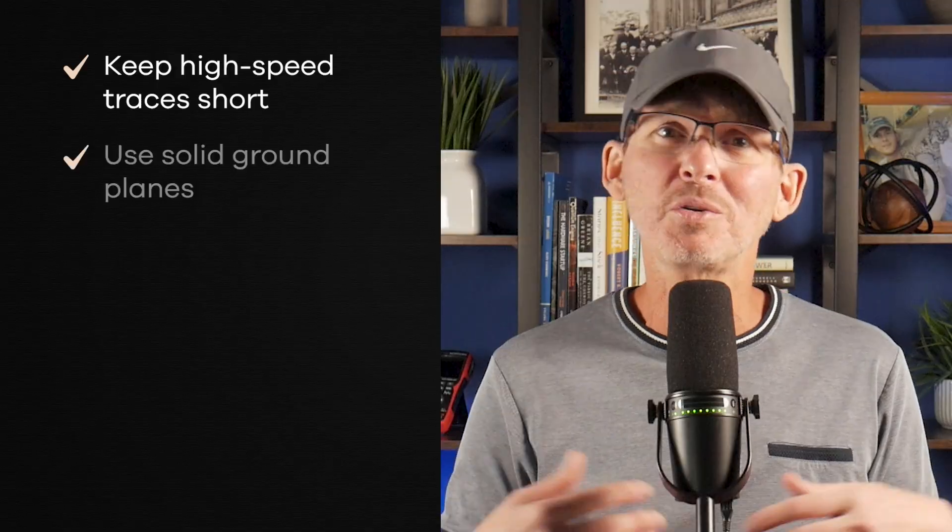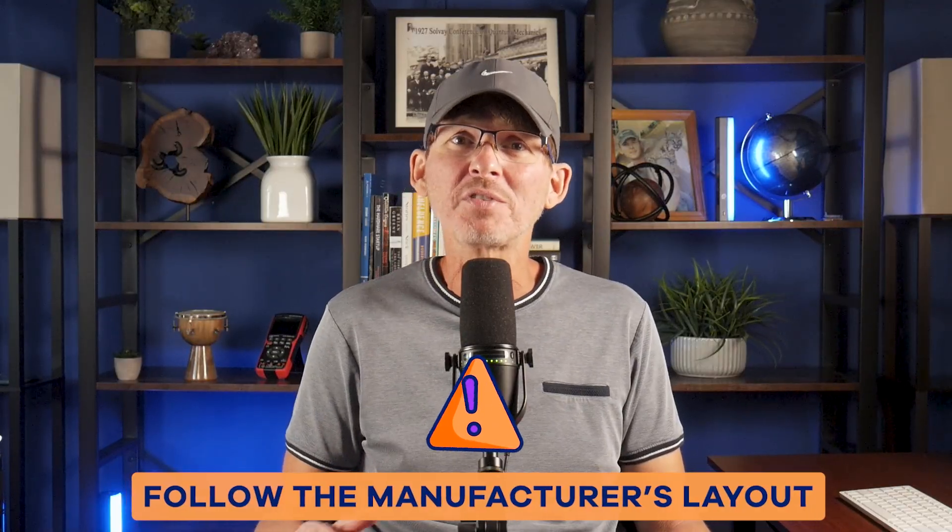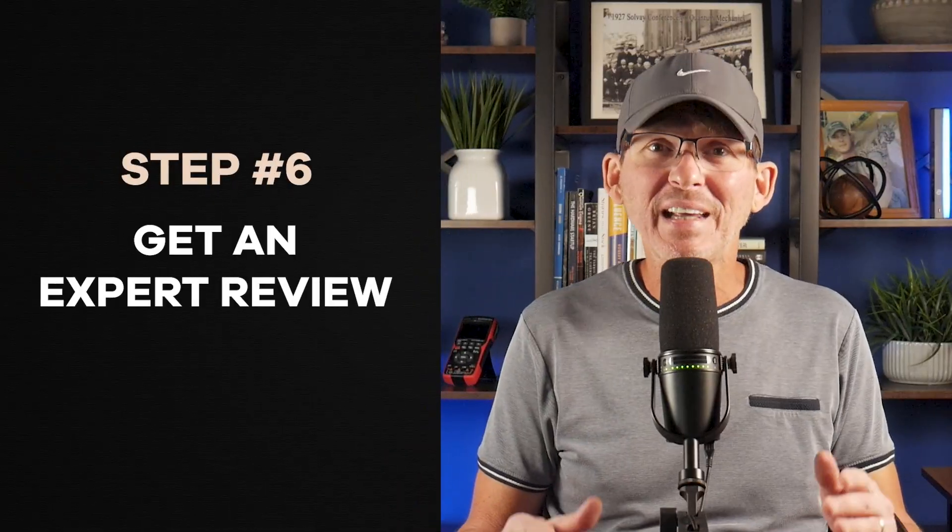Step five is to design for compliance, because good layout practices are everything. Keep high-speed traces short, use solid ground planes, add decoupling near noisy ICs, and filter your power supply lines. Watch for long return paths that can radiate noise like an antenna. If you're using a wireless module, follow the manufacturer's antenna layout exactly. If you've got a switching power supply, check for conducted noise on the input lines. Think about your enclosure too — plastic and metal behave very differently when it comes to shielding. Don't treat shielding as an afterthought; design with it in mind from day one.